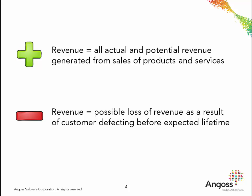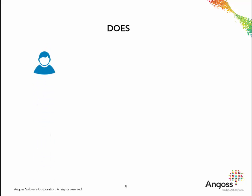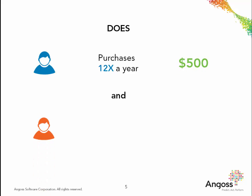Using a dollar value to represent the lifetime value is intuitive and has a straightforward interpretation. However, sometimes it may be misleading to simply use the dollar value. For example, does a customer who buys 12 times a year with products valued at $500 each time have the same value as another customer who buys only once a year with a value of $6,000?